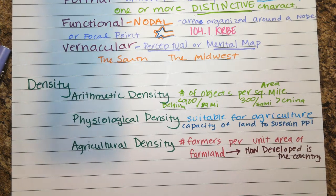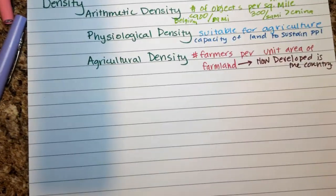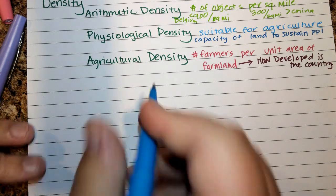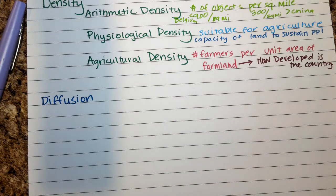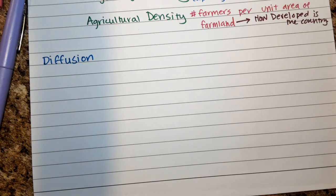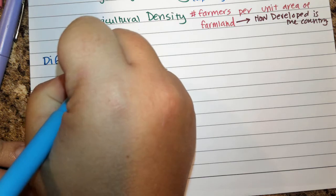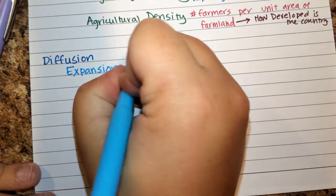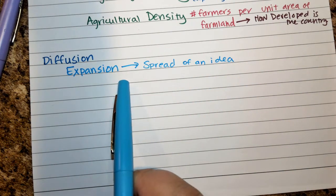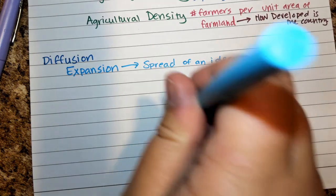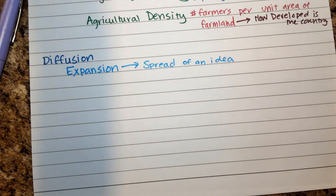The last thing we're looking at in this video is the different types of diffusion. There are four primary types. Technically, there are two main types of diffusion, and under one of them there are three subtypes. We start with expansion diffusion — the spread of an idea or something where you can trace it back to the source without it skipping any steps.